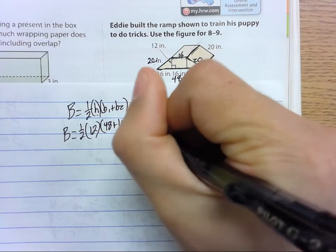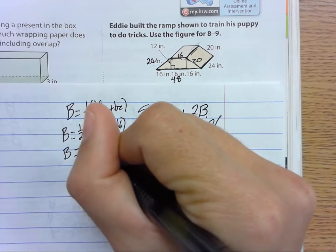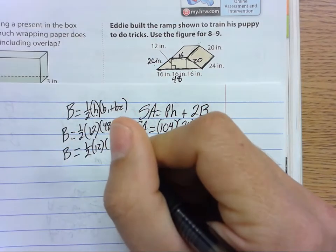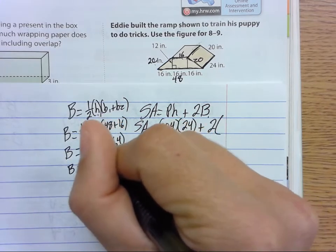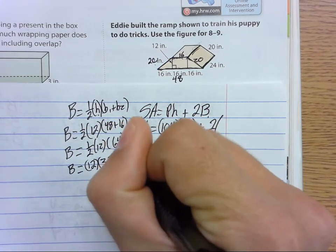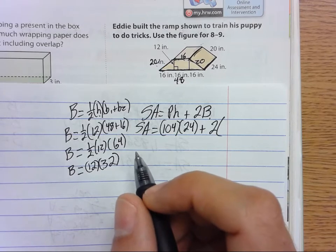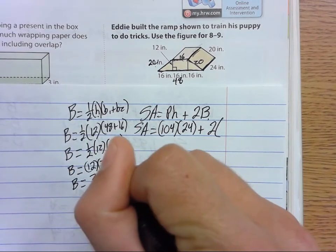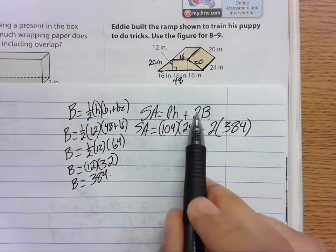Area of the base is—48 plus 16, when you add that up you get 64. So area of the base is half of 12—I'll probably take half of 64 actually and do 12 times 32. And 12 times 32, the area of the base is 384 square inches. So 384. Formula, substitute, now we need to solve.